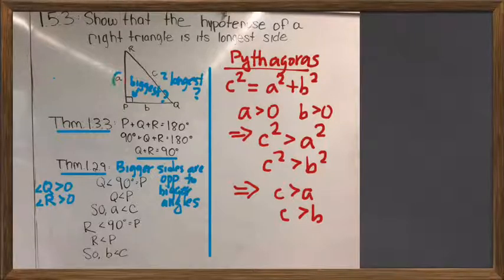And therefore, the side opposite Q is less than the side opposite P, which is C. And so we know the hypotenuse is longer than the side A, and analogously for the other side as well. So the Pythagorean theorem is not all that it's cracked up to be. I mean, it certainly is a really important result, but we didn't need it to prove that the hypotenuse of a triangle is its longest side.